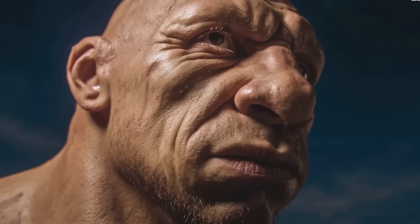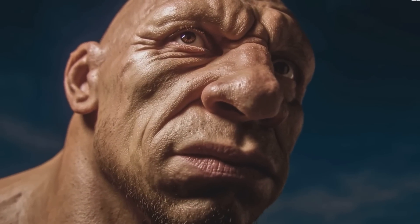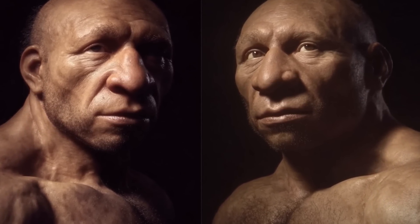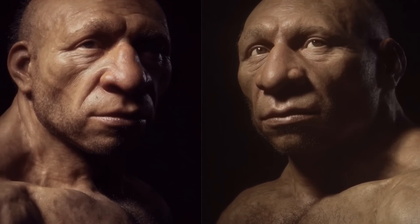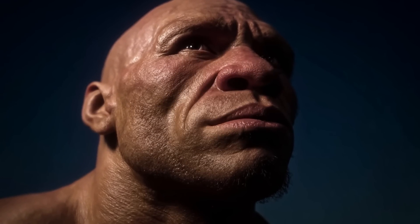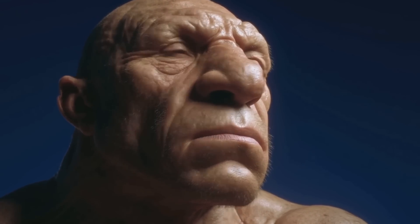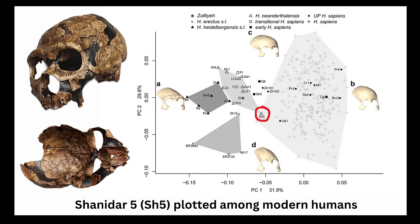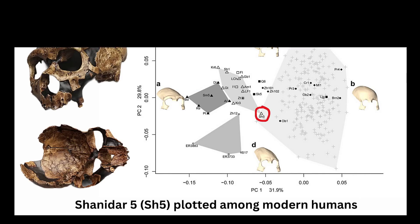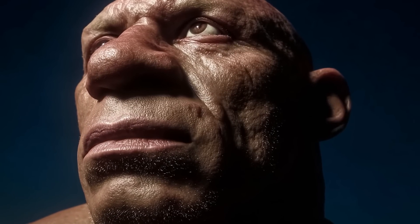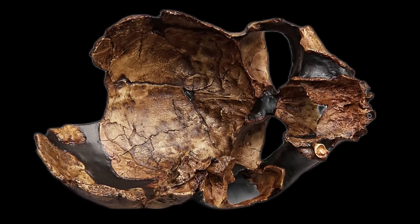The Shanidar V cranium is one of the most intriguing fossils from the late middle to early upper Pleistocene of the Near East, because it sits morphologically at the crossroads between classic Neanderthals and early Homo sapiens. When researchers compared it to fossils from Zutia, Arago, and Skul, the picture is far more complex than a simple Neanderthal versus modern human divide. Shanidar V could represent either a late, slightly atypical Neanderthal that overlaps with early modern human morphology, or a hybrid individual from a contact zone where these two lineages met.